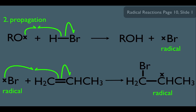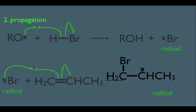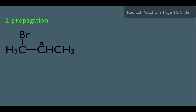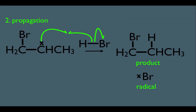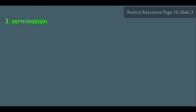Simply put, the Br has to be put on the primary carbon so that the secondary radical can form. This is why we pay attention to mechanisms, to understand why this happens this way. The next propagation step involves reacting this intermediate with an HBr that hasn't been turned into a radical yet. The result of this electron movement is our product, and as a side product we also get the Br radical, which enables this reaction to keep propagating. Then there's the third termination step, which involves two radicals coming together to simply make a non-radical.